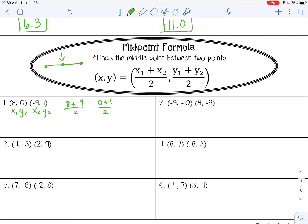So 8 plus negative 9, that's negative 1 over 2. 0 plus 1 is 1 over 2. So if you want to leave it in fraction form, you can. Or you could change it to a decimal, negative 0.5 and 0.5. Let's try another one.